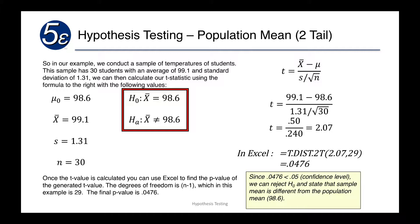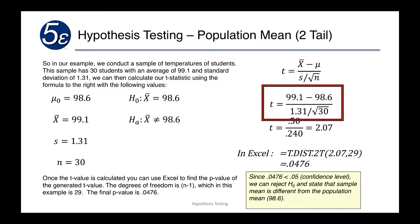So even though our sample clearly looks different — 99.1 against 98.6 — is it really that far off, or is it just small random probability that the sample mean was slightly off from the true mean? In all cases, we have H0 (the null hypothesis) and HA (the alternative hypothesis). H0 states x-bar is 98.6, and HA states x-bar is not equal to 98.6. When we plug in our numbers: t equals 99.1 minus 98.6, divided by 1.31 divided by the square root of 30, which gives us a value of 2.07.